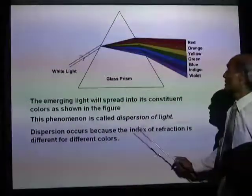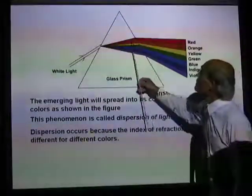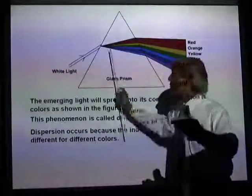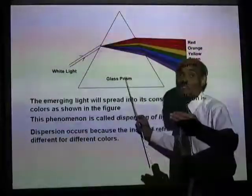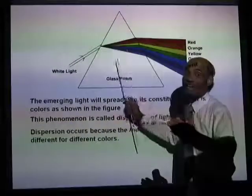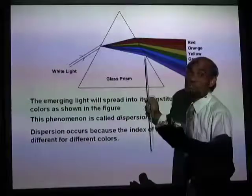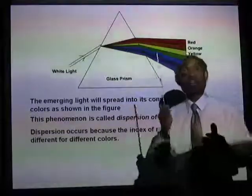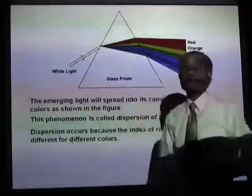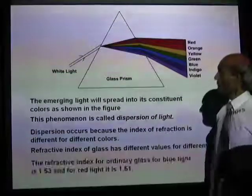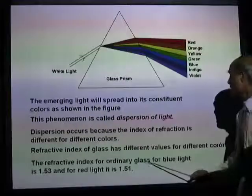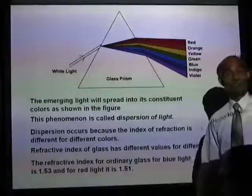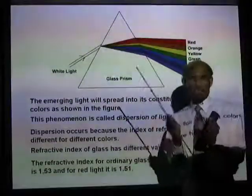Dispersion occurs because refractive index is different for different colors. Refractive index of glass has different values for different colors — glass has a refractive index for red, a different one for blue, and a different one for violet, because each of these colors will be bent at slightly different angles. The refractive index for ordinary glass for blue light is 1.53, and for red light it is 1.51 — slightly but distinctly different.